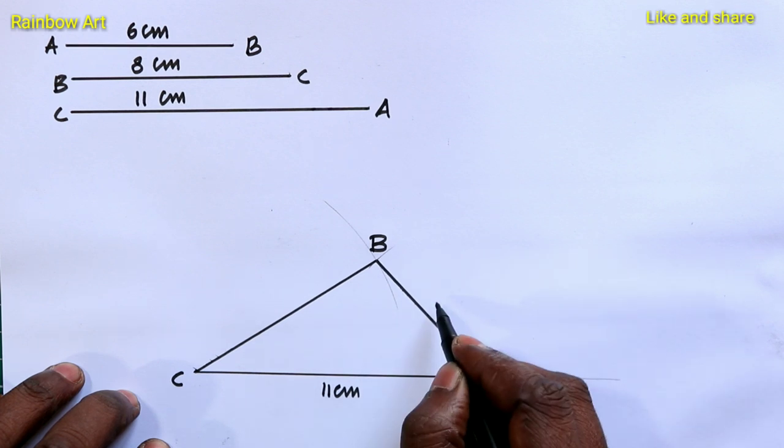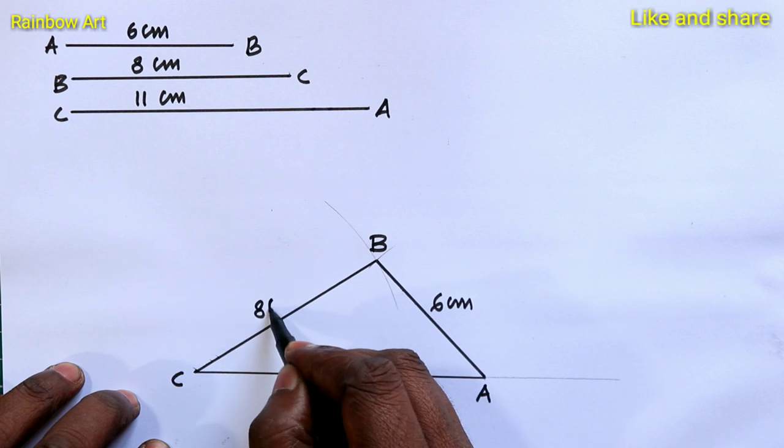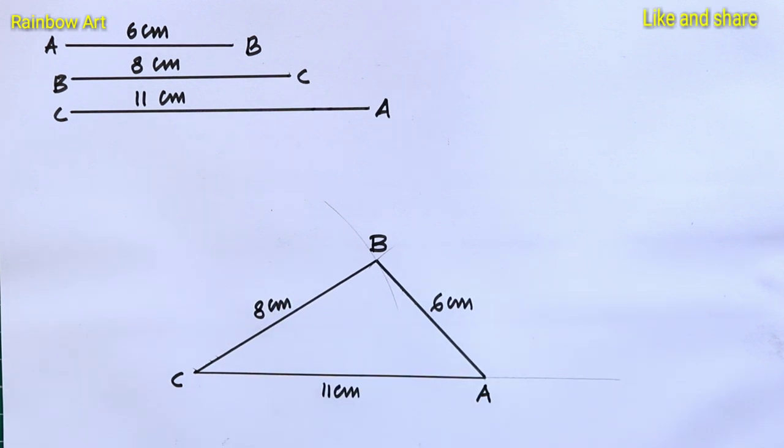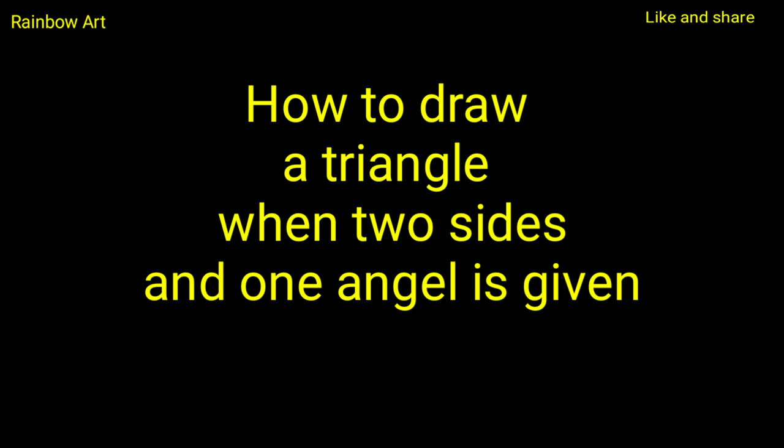This is 11 cm, this is 6 cm and this is 8 cm. Now we are going to learn another triangle. How to draw a triangle when two sides and one angle is given.